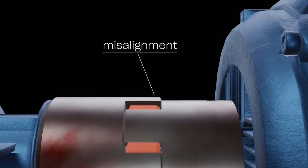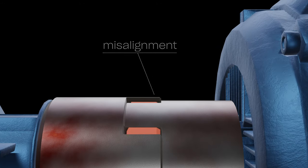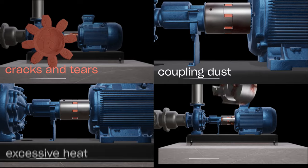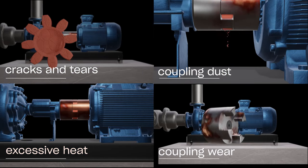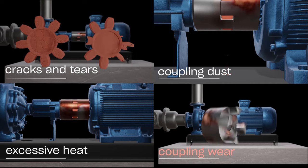Symptoms of misalignment to look for in the couplings include cracks or tears, coupling dust, changing of color due to excessive heat, and wear on coupling teeth.